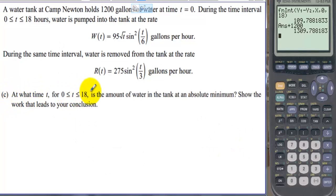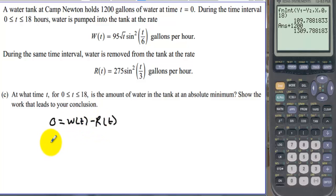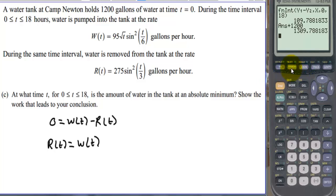Part C: At what time t for 0 to 18 is the amount of water in the tank at an absolute minimum? Show the work leading to your conclusion. To find mins and maxes we set the derivative equal to zero: 0 equals W(t) minus R(t). This represents the derivative of how much water is in the tank. We rearrange to R(t) equals W(t), then graph the two functions and find their intersection.